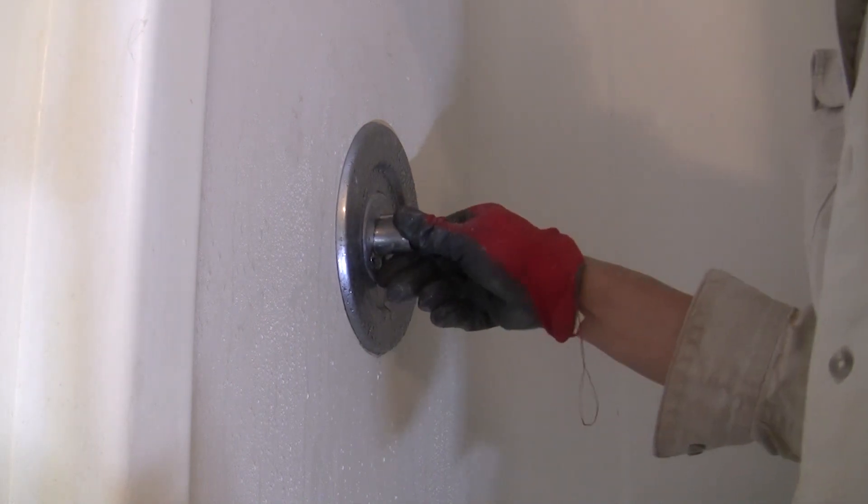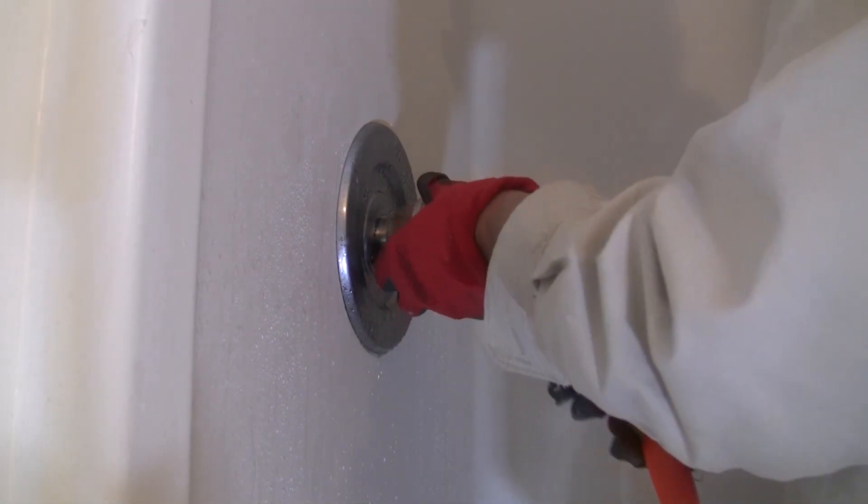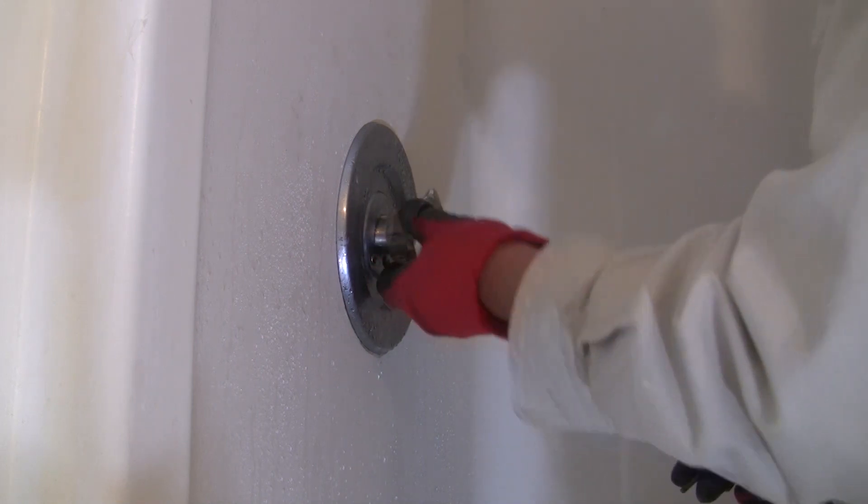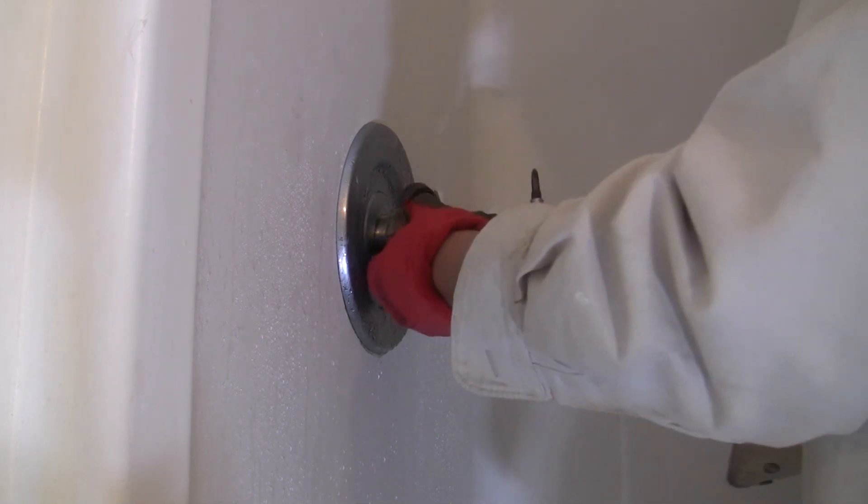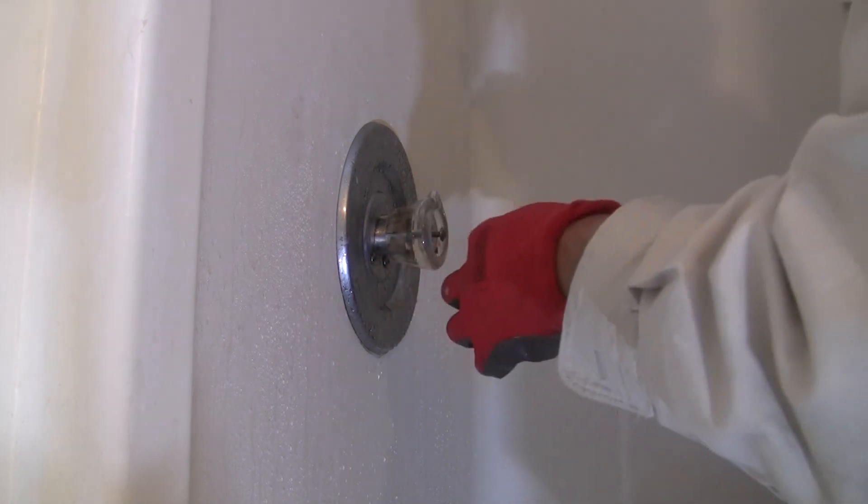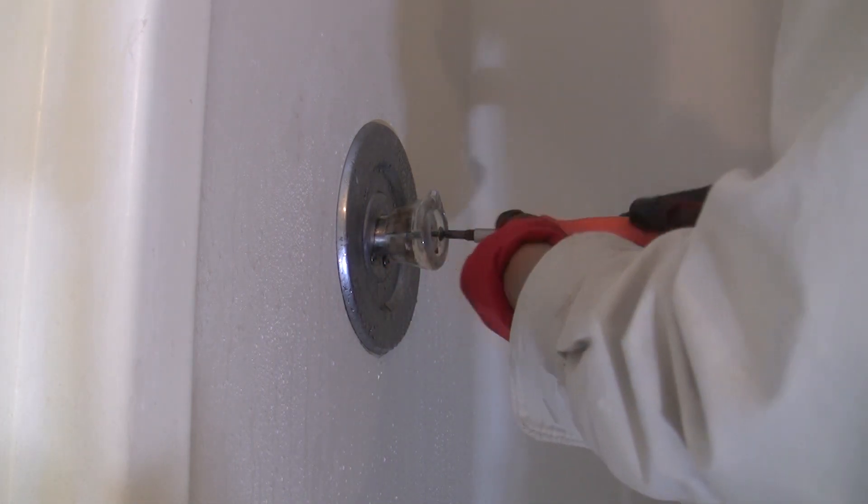Put back the stop tube and handle. Turn on the water at the source. Test the shower by turning it on and then firmly off again several times, making sure the new cartridge controls the water flow correctly.